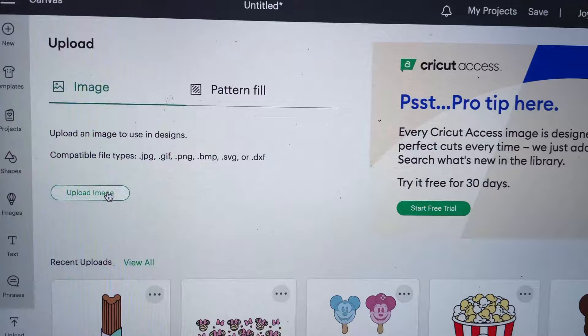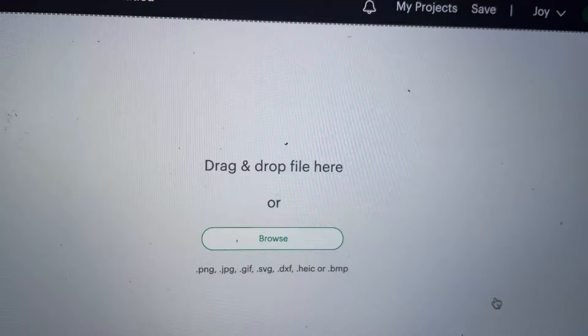When creating your vinyl piece, you want to open a new project and hit upload. And from here you can upload your SVG file of whatever design you choose. You can find these on Etsy, it's usually a couple cents to a dollar for a multi-pack.